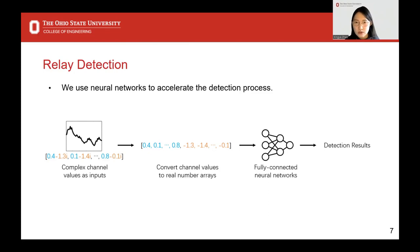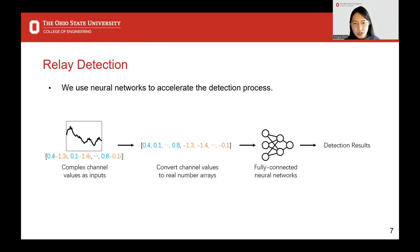The relay detection module runs for every input channel, so we want its runtime to be as short as possible. Although we prove feasibility by resolving signal paths from channels, we observed that for this detection task, using neural networks can provide comparable accuracy as the signal path method. So we choose to use neural networks to accelerate this process. We separate the real and imaginary parts of the complex channel values and assemble them into a real number array, which is sent to a fully connected neural network model to produce a binary number representing the existence of an attacker.